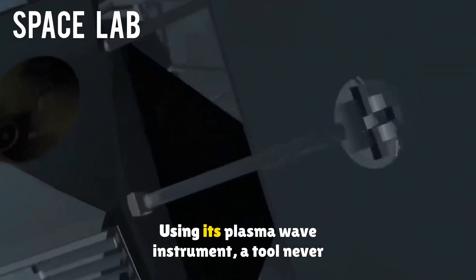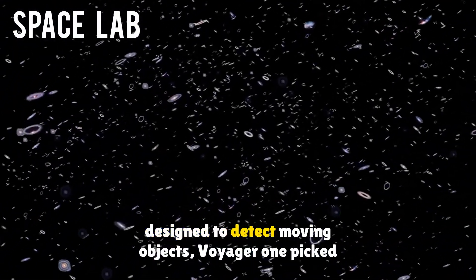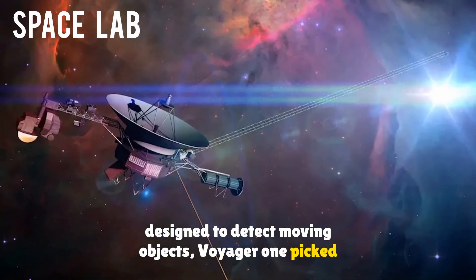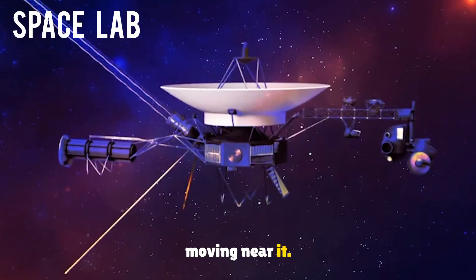Using its plasma wave instrument, a tool never designed to detect moving objects, Voyager 1 picked up rhythmic, fluctuating signals that indicate something was moving near it.